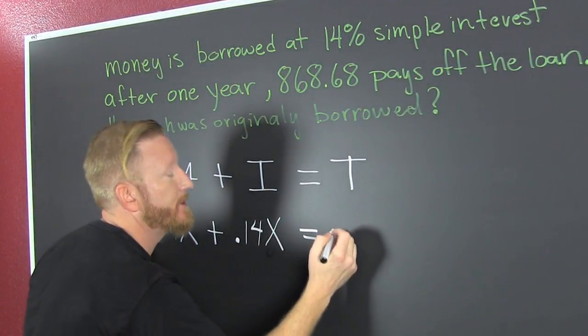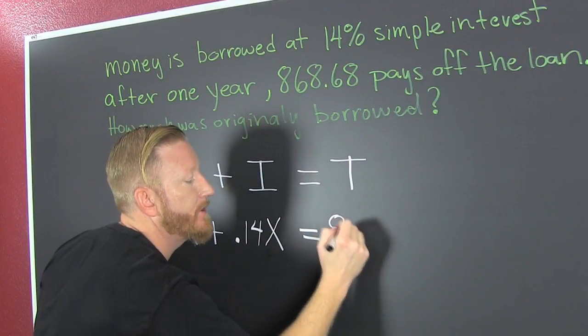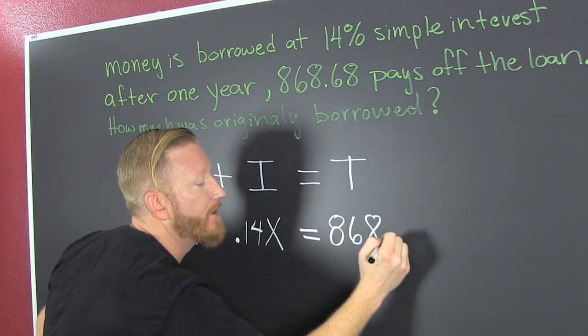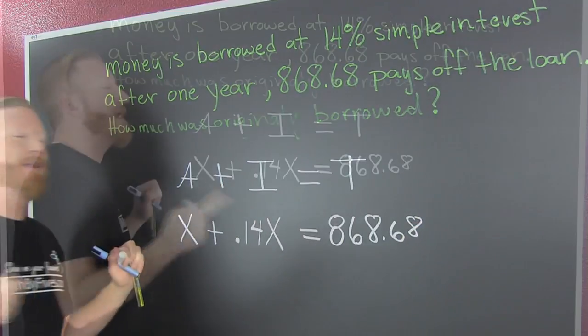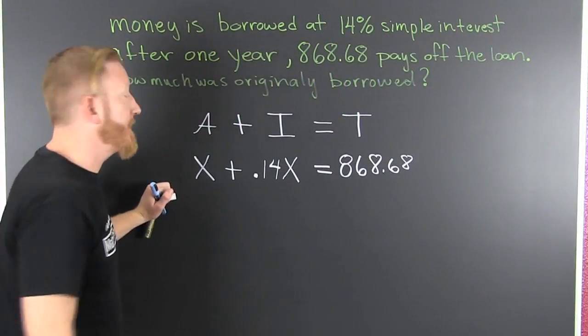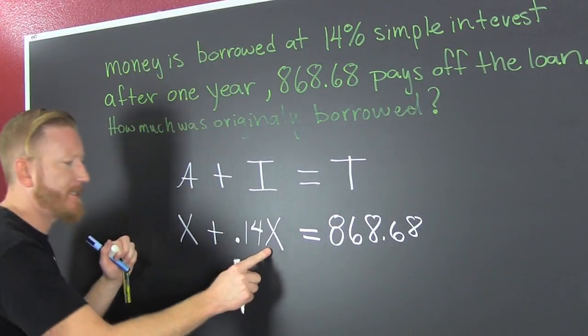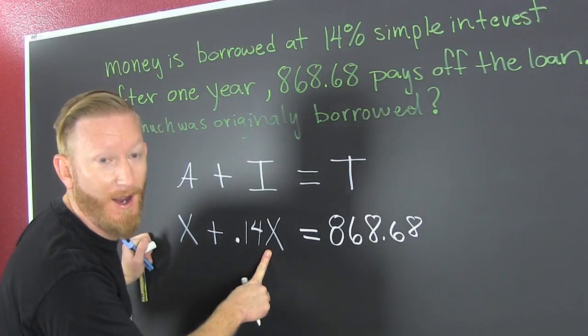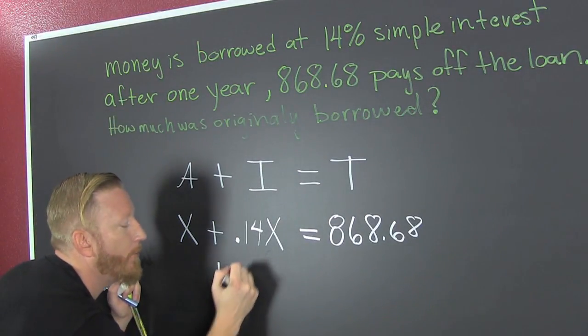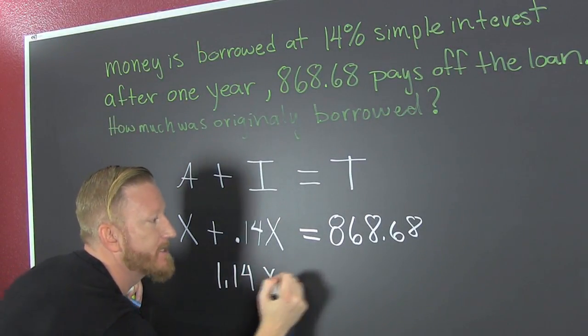And then this is going to be equal to $868.68. Well, now it makes sense to combine like terms. I'm going to get my X's together. This is 1.14X.